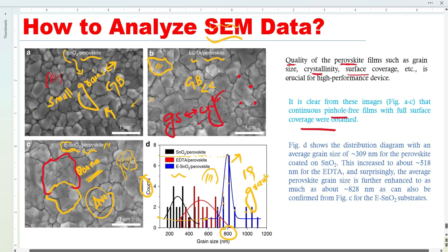There are no pinholes, no holes - all these are good. But now let's see which one is superior. Figure D shows the distribution diagram with average grain size. The average size is basically for the perovskite coated on SnO2 - this one shows basically 309 nanometers. This shows 518 for sample B, and the last one is basically around 822 nanometers average size. This can also be confirmed from Figure C. From Figure C we can clearly see the grain size is very, very clear.